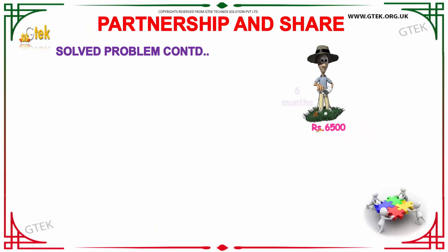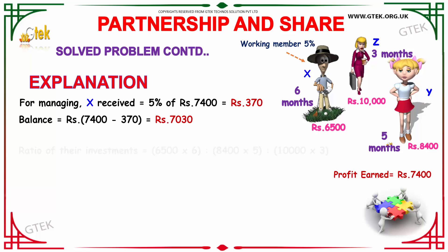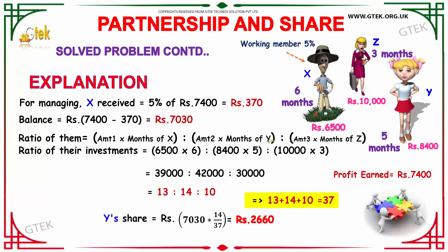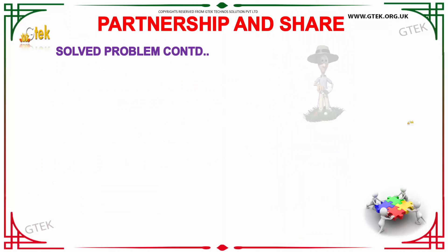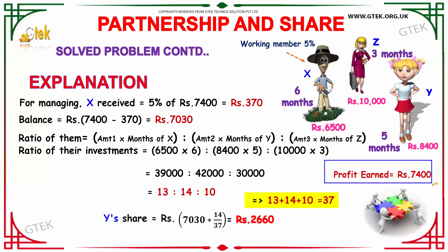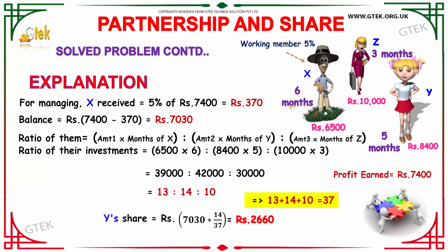X invested Rs. 6,500 for 6 months, Y invested Rs. 8,400 for 5 months, and Z invested Rs. 10,000 for 3 months. The total profit earned is Rs. 7,400. Since X is the working member, 5% of Rs. 7,400 equals Rs. 370 is given to X for managing. The balance amount is Rs. 7,400 minus Rs. 370, which equals Rs. 7,030. The ratio of investments is 6,500×6 : 8,400×5 : 10,000×3.